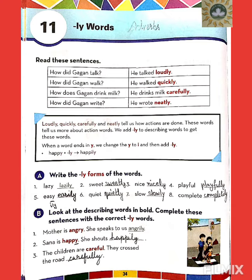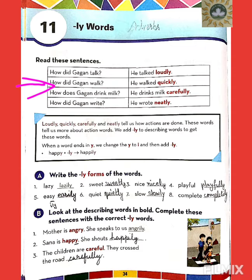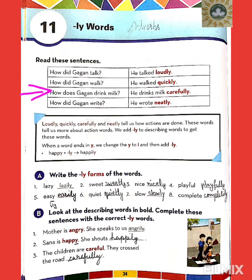Now to begin with, we will first read these sentences. How did Gagan talk? He talked loudly — the red word is loudly. How did Gagan walk? He walked quickly — the red word is quickly. How does Gagan drink milk? He drinks milk carefully — the red word is carefully.